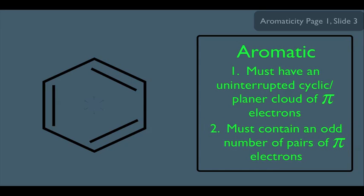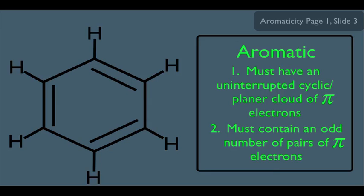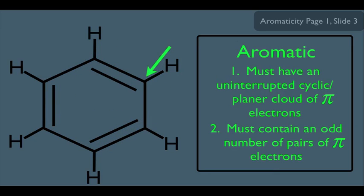First, let's fill in the hydrogens that would actually be on this molecule. Notice that every single carbon within this benzene ring is doubly bonded and is also sp2 hybridized. This is very important. Let's get a quick review of what it means to be sp2 hybridized in terms of what the orbital arrangements are.